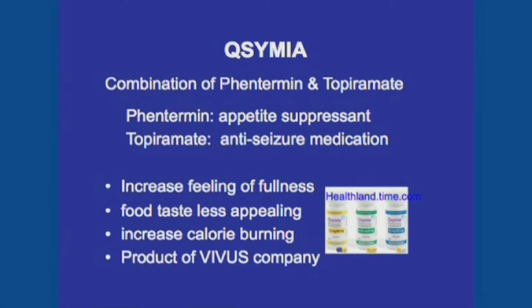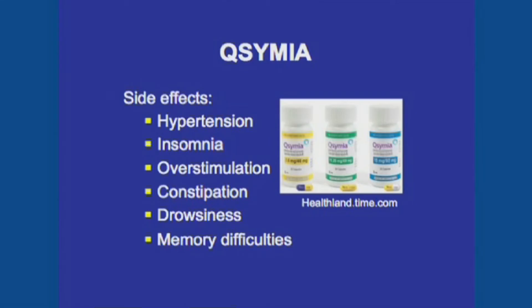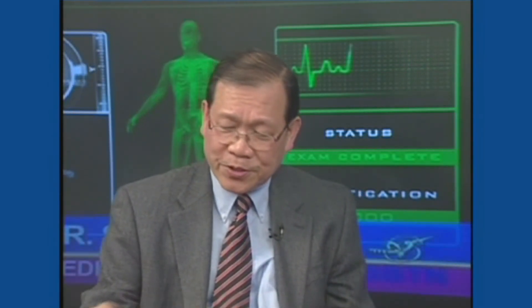The second medication is Qsymia — a combination of two medications. The first is phentermine, which suppresses appetite. It is combined with topiramate, a medication used to treat seizures. During studies of topiramate, patients taking it really lost their appetite, and they were losing weight. The combination of the two helps patients reduce their weight. Complications of Qsymia include hypertension, difficulty sleeping, constipation, and some mild degree of memory difficulties. This medication is a product of a company in California, and they plan to launch it at the end of the year and in early 2013 for people to use.